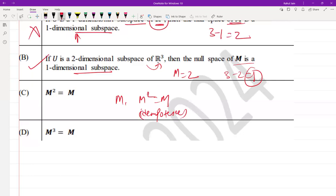And option D is M³ = M. So since M² is also M, thus we can say that by multiplying M² with M we can say that M³ will also be M. So this is also true.